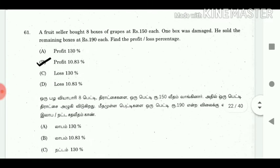61. A fruit seller bought 8 boxes of grapes at Rs. 150 each. 1 box was damaged. He sold the remaining boxes at Rs. 190 each. Find the profit or loss percentage. Answer: Profit 10.83%.